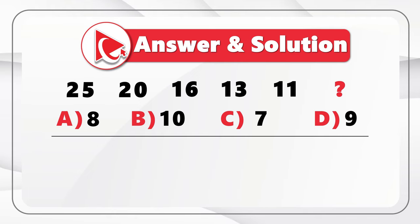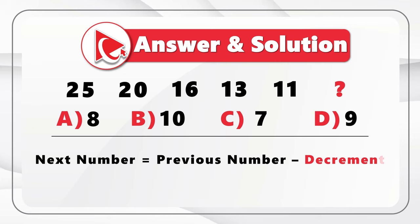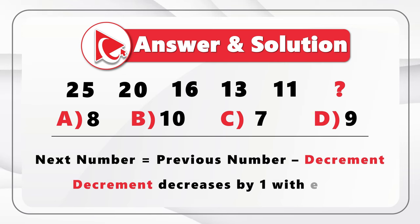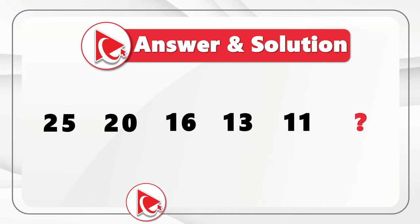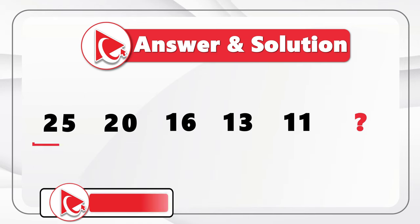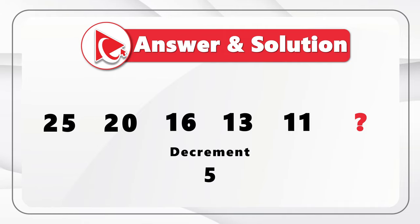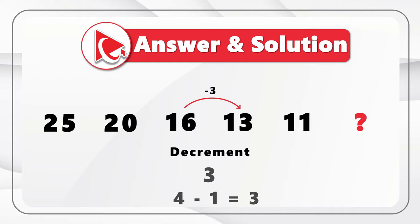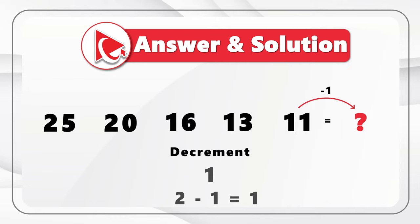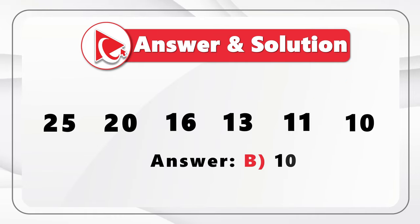Here we have a concept of decrement, where the next number equals the previous number minus a decrement that increases by 1 with each step. The first number is 25, with an initial decrement of −5: 25 − 5 = 20. Then decrement becomes −4: 20 − 4 = 16. Then 16 − 3 = 13, 13 − 2 = 11, and 11 − 1 = 10. So the correct answer is choice B, 10.